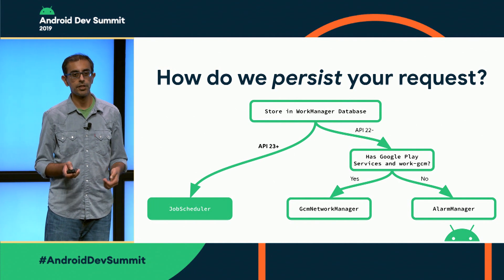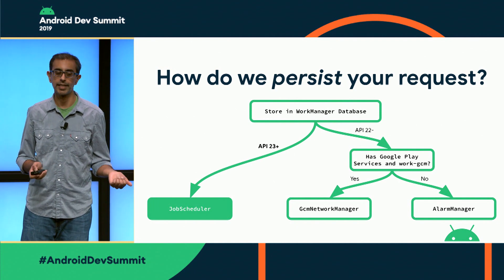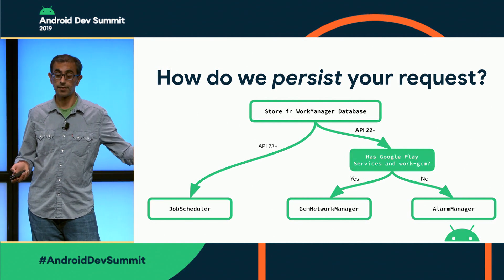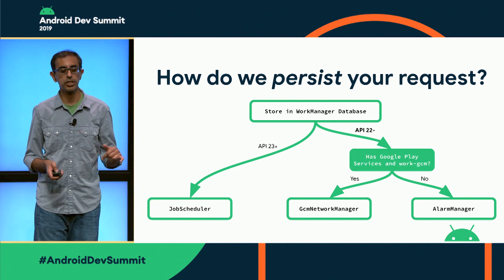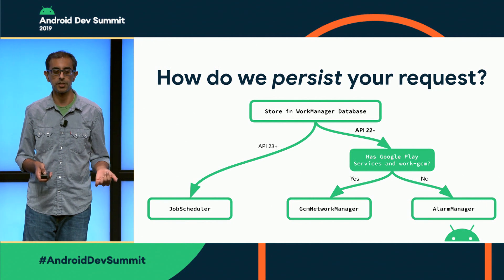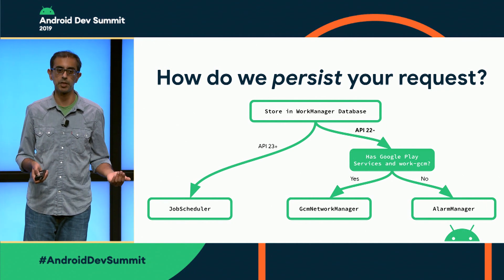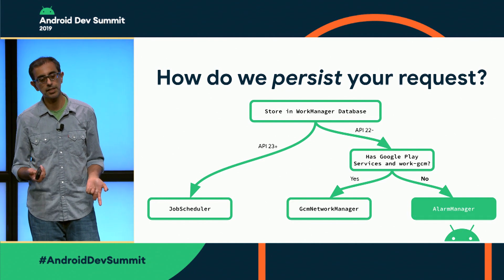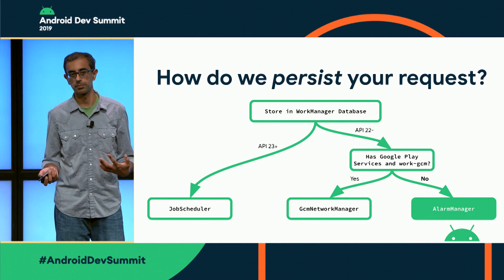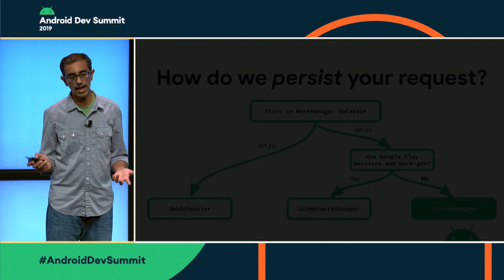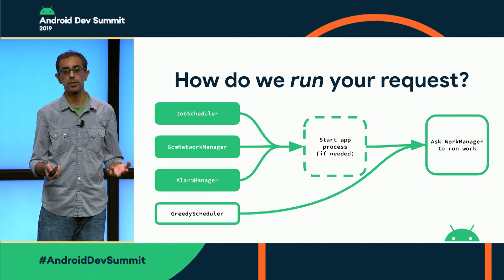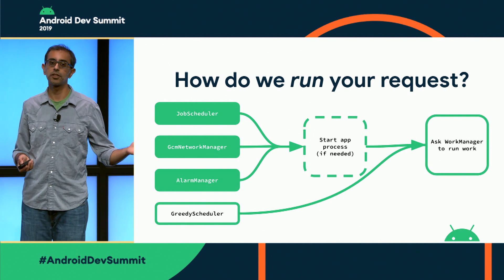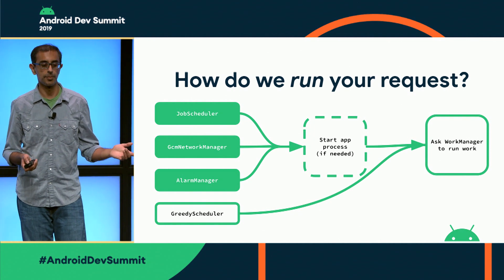After that, if you're on a newer API — API 23 and up — we'll send this request to JobScheduler. For API 22 and below, we'll check: if you have Google Play Services on your device and you're using the WorkGCM dependency, we'll send it to GCM Network Manager. Otherwise, we have a custom Alarm Manager and Broadcast Receiver implementation. So after all of this is done, how does your WorkRequest run? We talked about JobScheduler, GCM Network Manager, and Alarm Manager.